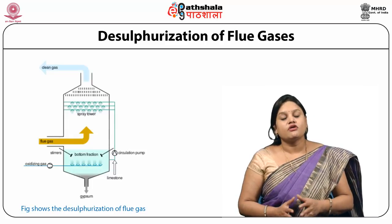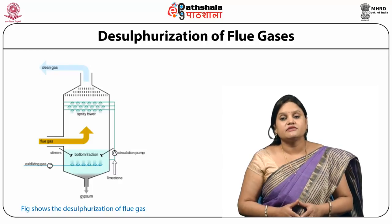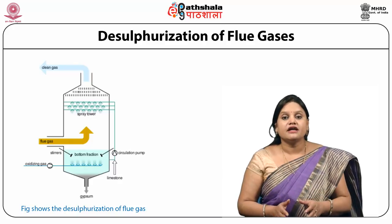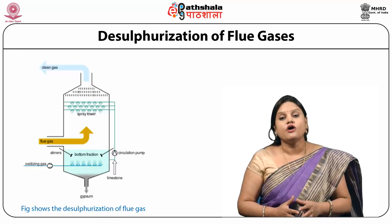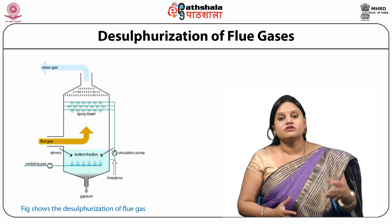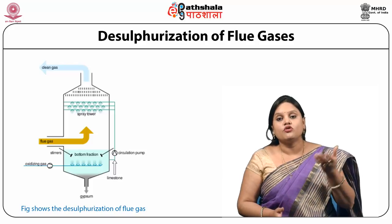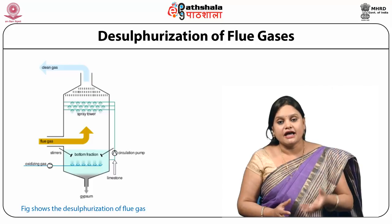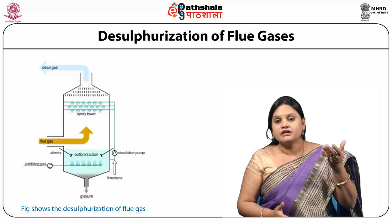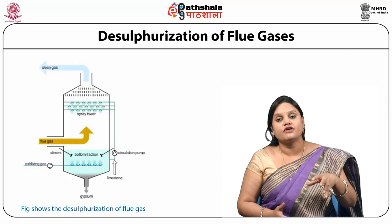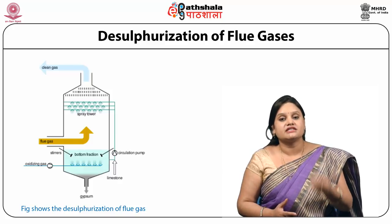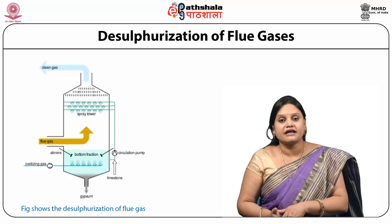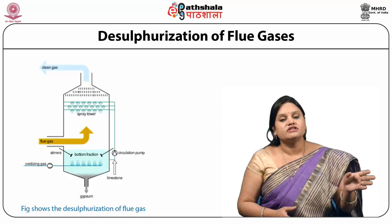This figure shows the process of desulfurization of flue gases using calcium carbonate. In a closed chamber, a limestone bed is used to absorb sulfur dioxide from the flue gas. The flue gas is passed through the limestone bed into the chamber. A spray tower at the upper layer sprays through the flue gases, settling particles at the base of the tank, and clear gas passes out through the top.